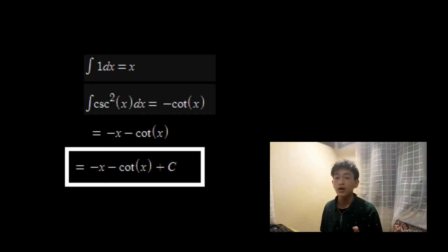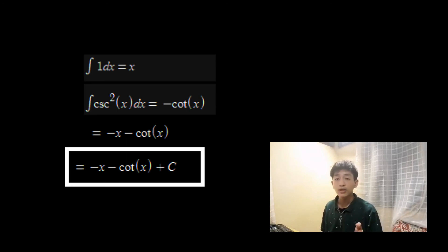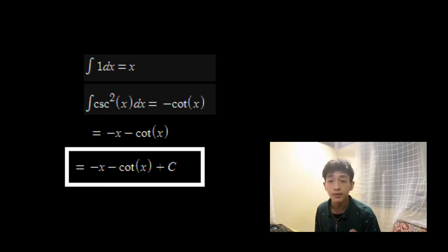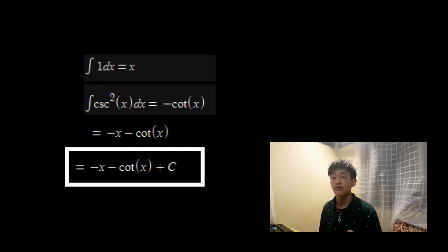After getting the integral, all we have to do now is simplify and add a constant. So, the answer would be negative x minus cotangent times x plus c. And that is all for integration.